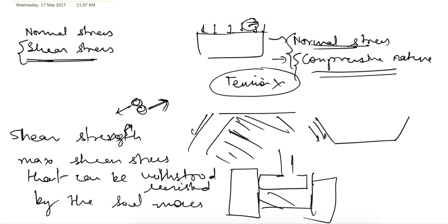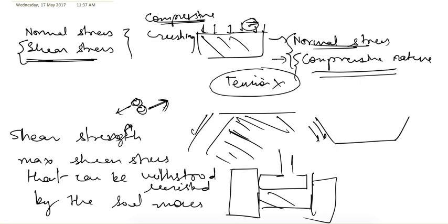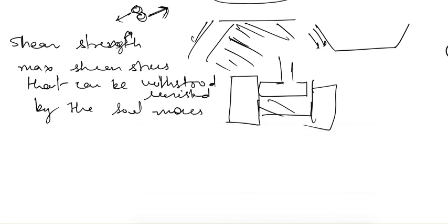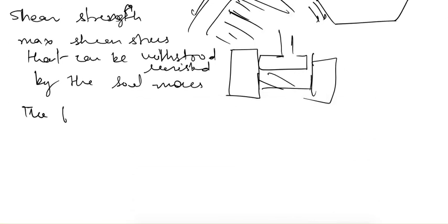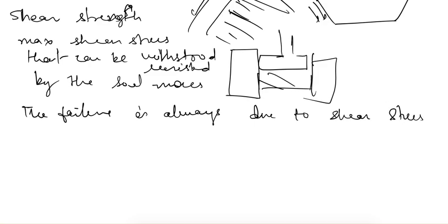We studied these normal stresses, and soil does not fail by compressive stress. Compression means crushing of particles, but before any crushing can ever happen, the soil will fail due to shear stress. So in soil, failure is always due to shear stress — shear failure will occur in the case of soil.